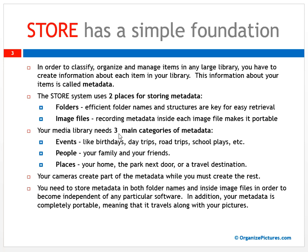Both folders and image files are very important. There are also three main categories of metadata that are needed. First, events — like birthdays, day trips, road trips, school plays. This is what our lives are made of. Second, people — your family, your friends. This involves face recognition technology to identify people in your photos. Third, places — your home, the park next door, or a travel destination. These three categories help you find photos when you need to.